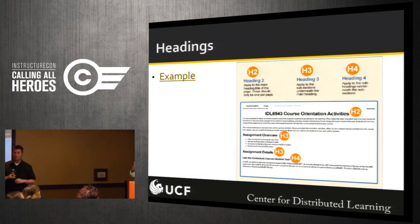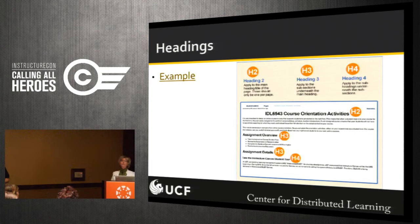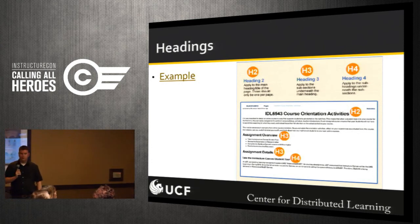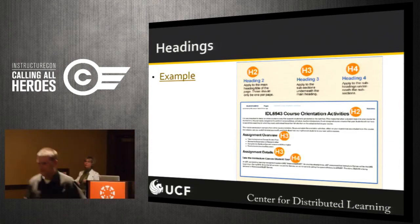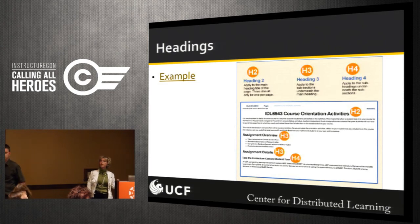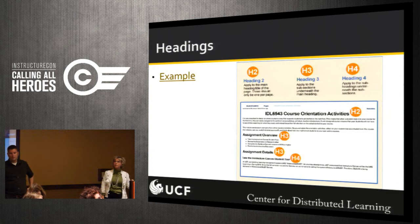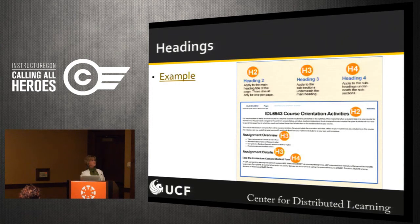Dana from Instructure is in the room — she's the Canvas Accessibility Guru. An audience member suggests using a code for the page name — something like CCP for the course — so just the code shows at the top, and then you can still use heading 2 for the actual name. That's a great idea. Thank you for sharing that.